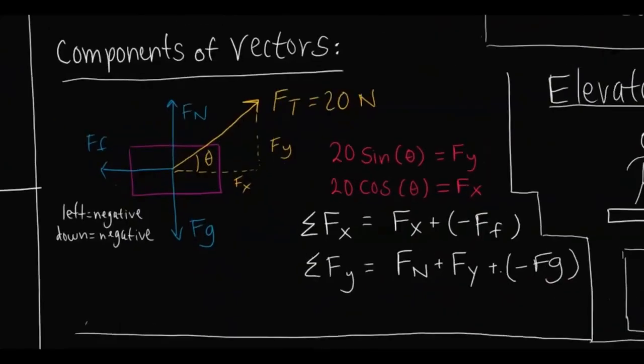For components of vectors — if you pull a sled at an angle, the force of tension doesn't act equally in all directions, so you break it into x and y components. You need to know theta, the angle the force makes with the horizontal, and then use trig to find each value. The net force in the x direction is the x component of tension minus friction (negative FF), and in the y direction it's force normal (positive, acting up) plus the y component of tension, plus Fg (negative, acting downward).